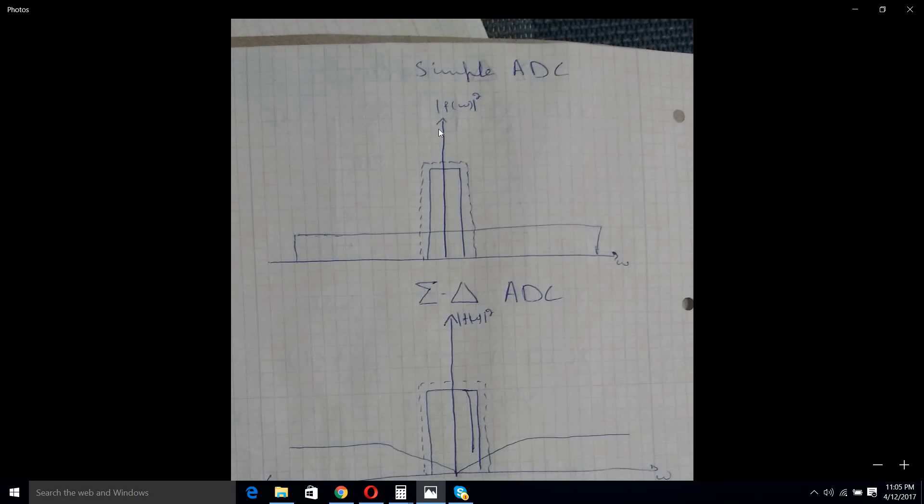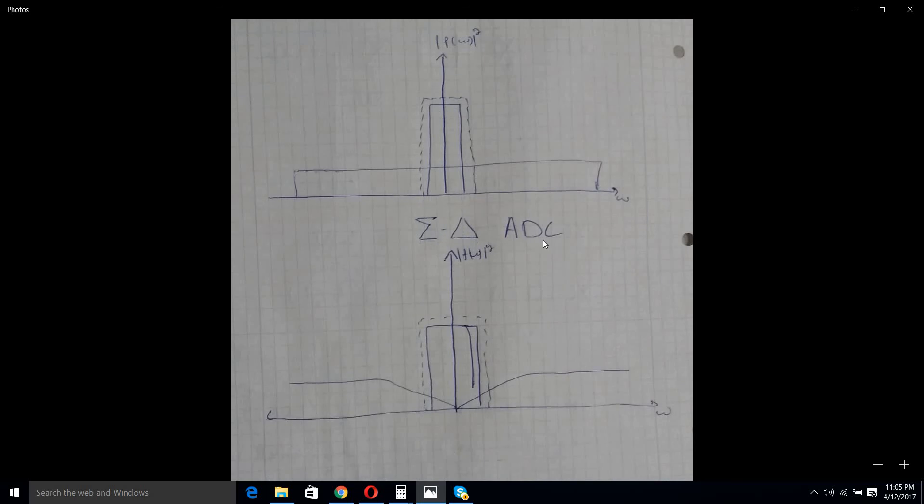Over here in Sigma Delta converter, this gain is 9 dB. I will do the math some other day, but this means that we can get a higher number of effective bits in a Sigma Delta converter.